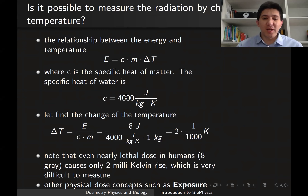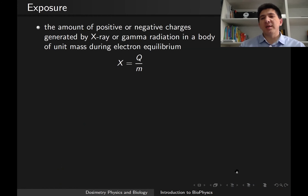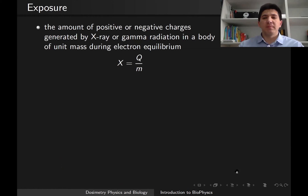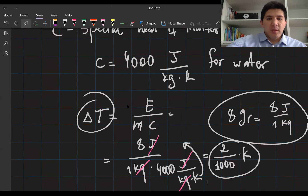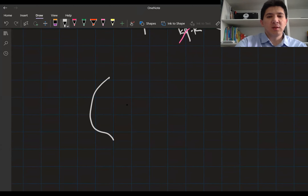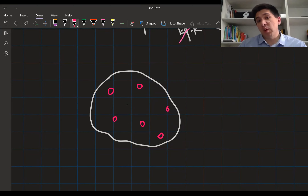That is why we need to think about different concepts for measuring radiation. One of them is called exposure. What exposure measures is the charge around a volume divided by the mass of that area. Let's say I've got a region where I would like to send radiation.